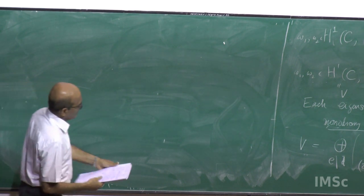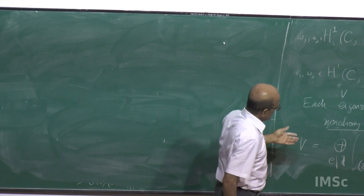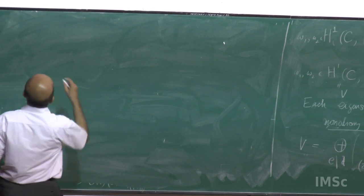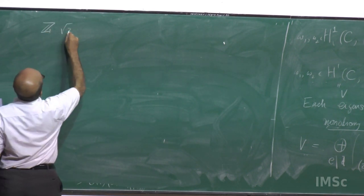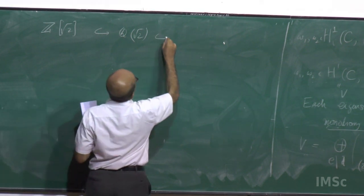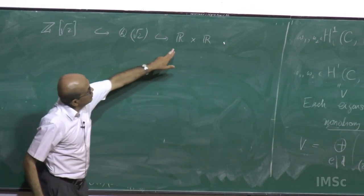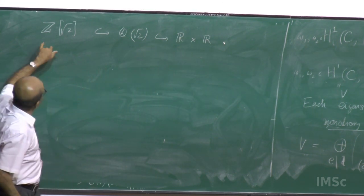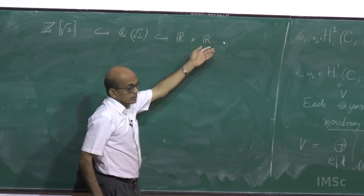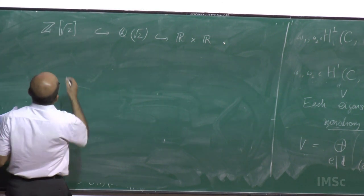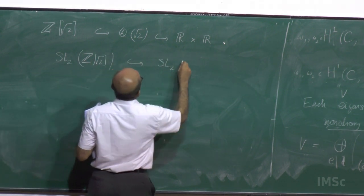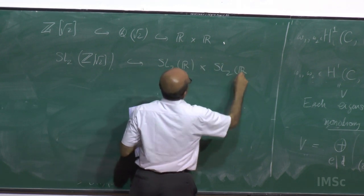So let me sort of change tack a little bit. There is a kind of criterion for thin groups, which can be read off from Deligne-Mostow, most of which I will give you first. So let us look at the ring of integers Z[√2] inside Q(√2). This has two real embeddings: a + b√2 goes to a + b√2 and a − b√2. So Z[√2] goes into a discrete subgroup. That also means SL₂(Z[√2]) is embedded in SL₂(ℝ) × SL₂(ℝ) as a discrete subgroup.